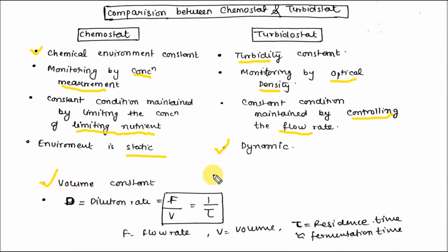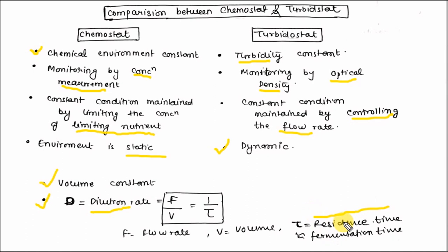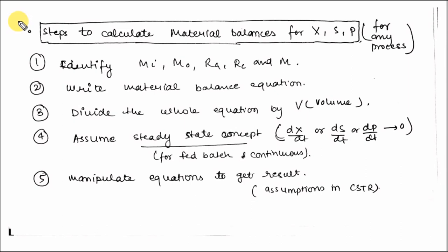Volume is constant in the CSTR. An important parameter in the CSTR is the dilution rate, which is the flow rate divided by volume, or one divided by tau, where tau is the residence time. In batch operation we use fermentation time or conversion time, while in a continuous reactor we use residence time — the time required to convert substrate into product, or the time a substrate stays in the reactor.